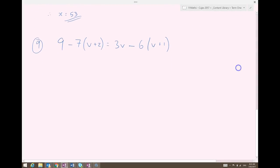Finally, a little challenge question here. I've got the variable on both sides of the equation. I've got nasty little bits everywhere. We need to be careful here. We want to simplify each side first before we try and do anything else.